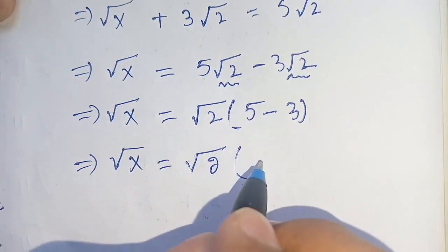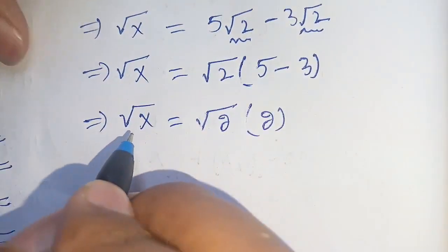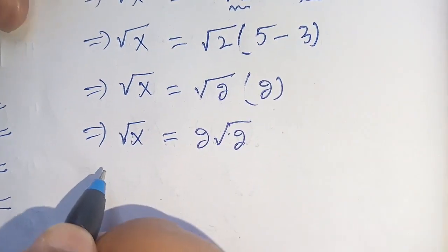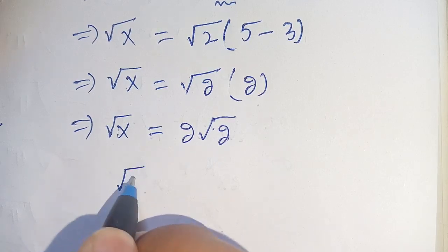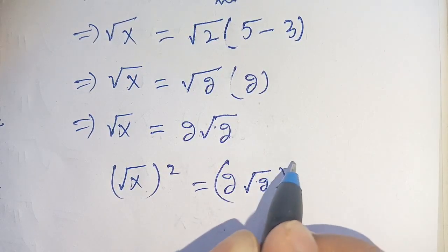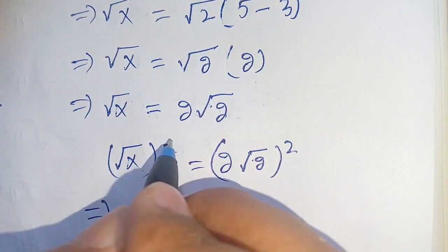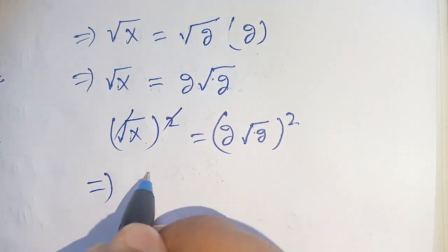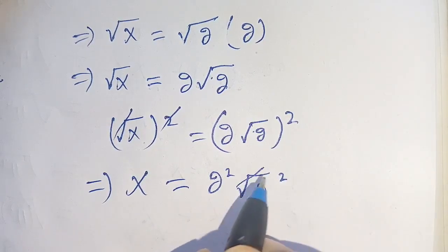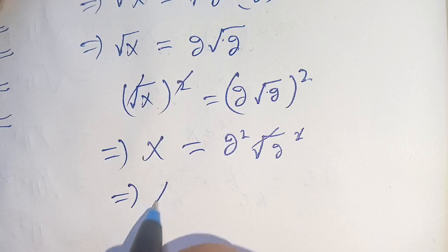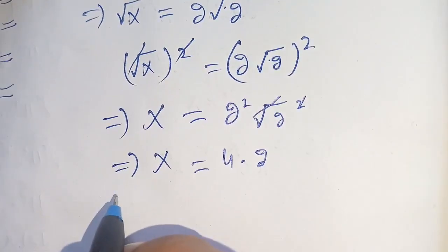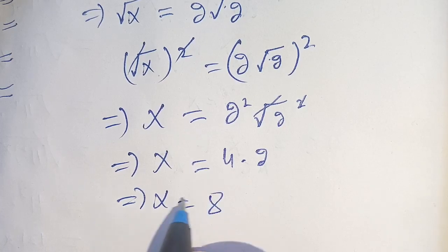So square root of x equals square root of 2 times 2, which is 2√2. Squaring both sides, x equals (2√2) squared, which gives 2 squared times (√2) squared. That equals 4 times 2, which implies x is equal to 8.